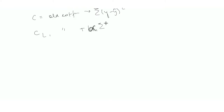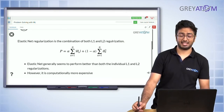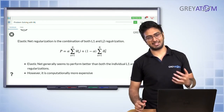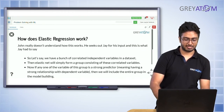C_L1 is old cost function plus alpha times summation of |θ|, and C_L2 is old cost function plus alpha times summation of θ². And then C_elastic is the same old cost function plus alpha times summation of |θ| plus (1 − alpha) times summation of θ². This combines the advantages of both L1 and L2.